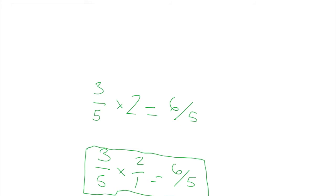Fractions can be confusing from the start for some kids. So when you're multiplying fractions, please try this way — it's a lot clearer. All you have to do is simple multiplication: three times two equals six, and then five times one equals five. Please go as I advise.